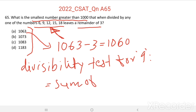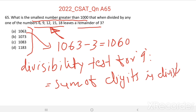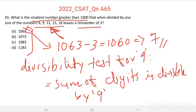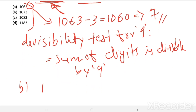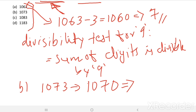The sum of digits is divisible by 9. The sum of digits of 1060 equals 7. Since 7 is not divisible by 9, this is not the answer — we can eliminate option A. Now see the next option, B: 1073. After deducting 3 we get 1070. The sum of digits of 1070 equals 8. Since 8 is not divisible by 9, we can eliminate option B also.